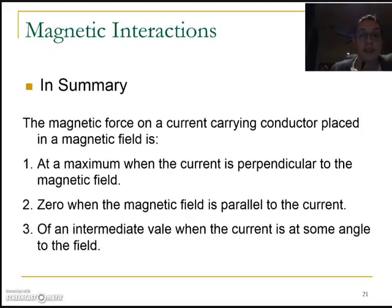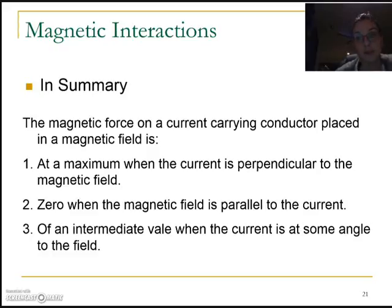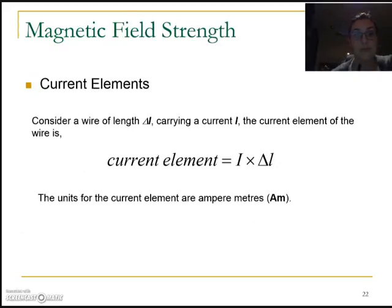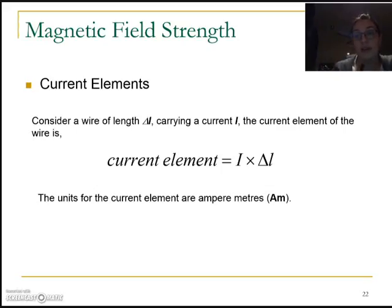The magnetic force on a current-carrying conductor is at maximum if it's perpendicular to the magnetic field, and it's zero when the wire is parallel to the field. It's an intermediate value if the current is at some angle in between. A current element is a fancy term that describes a small portion of the wire that's actually inside the magnetic field and has some current travelling through it.